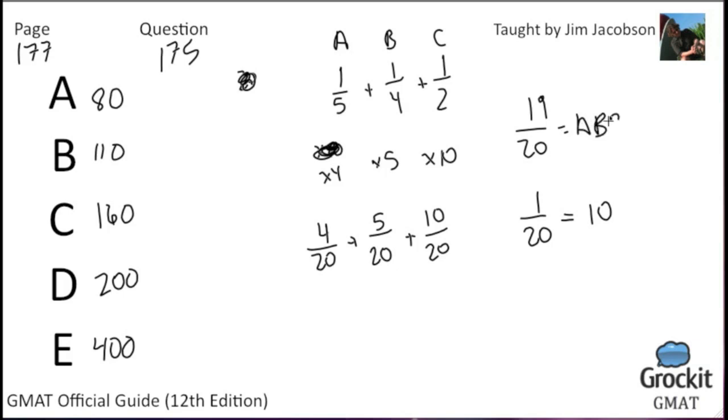So if one-twentieth of the class is 10 students, then there are 200 students in the class. We figured out how many have A's, B's, and C's. One-twentieth is the only remaining fraction of those who did not get A's, B's, or C's, and we got the actual number of that, so we would just multiply times 20 to figure out the actual number.